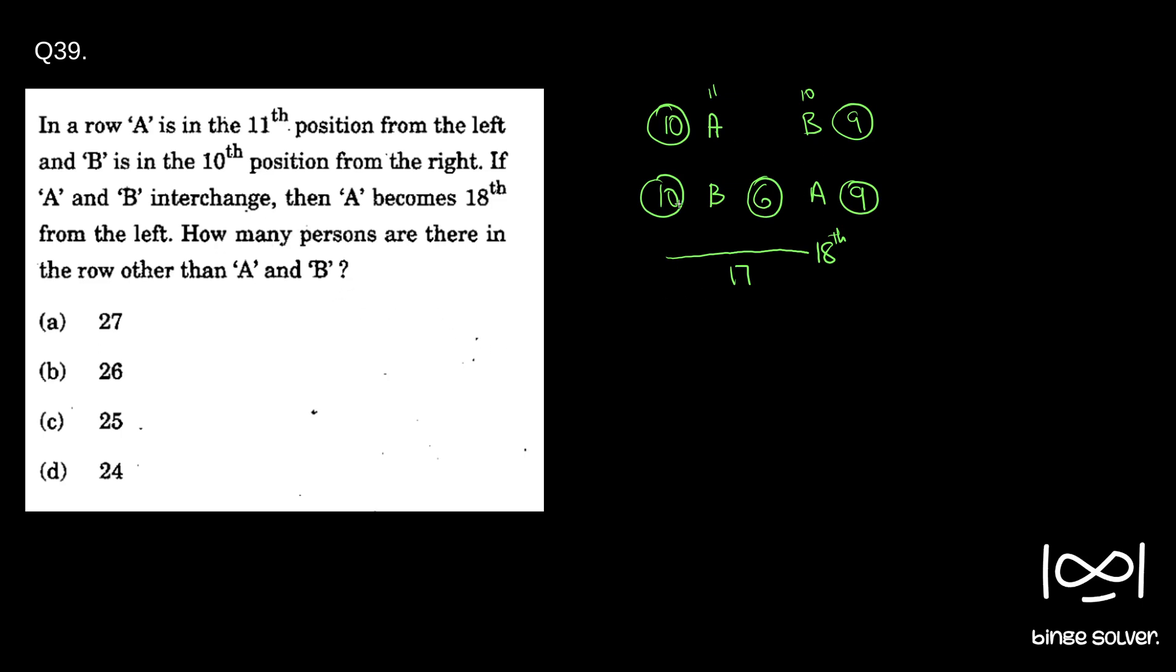So how many persons are there in the row other than A and B is the question. Which is 10 plus 6 plus 9, so which is 15 plus 10, 25. So correct answer is C. Solution to 39 is C.